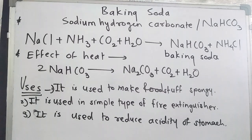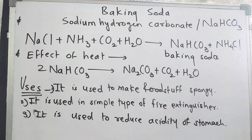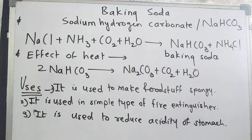The reaction for preparing sodium hydrogen carbonate is the same as the one we saw for washing soda. NaCl plus ammonia plus CO2 plus H2O react together to form NaHCO3, that is baking soda. The second product is NH4Cl, which is ammonium chloride.